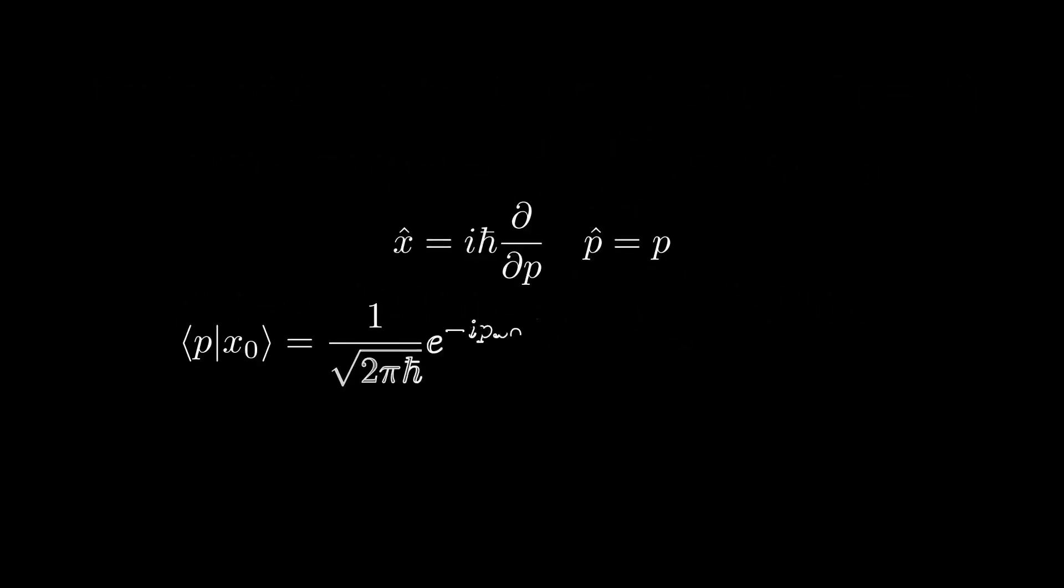In momentum space, the definitions of the momentum and position operators effectively swap, where we define the momentum as just p, and then define the position x as the following differential in p. Note the lack of a minus sign here in the definition of x, unlike what we have for the momentum operator in the position basis. All our definitions for expectation value and whatnot still hold as we defined them previously, except now we integrate over dp rather than dx.